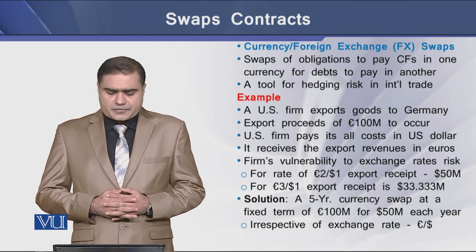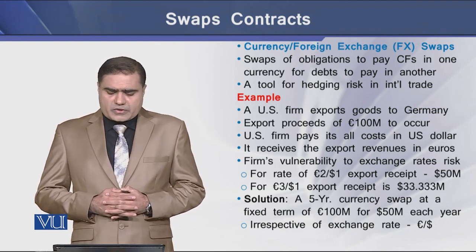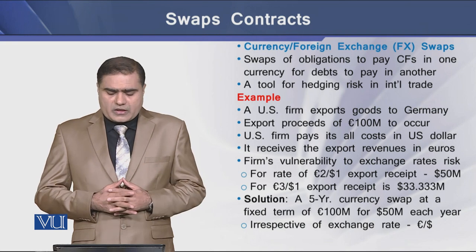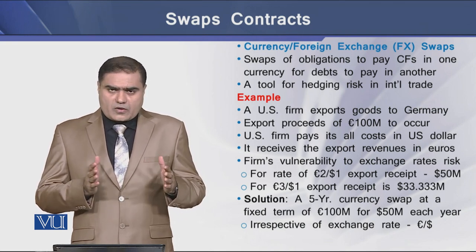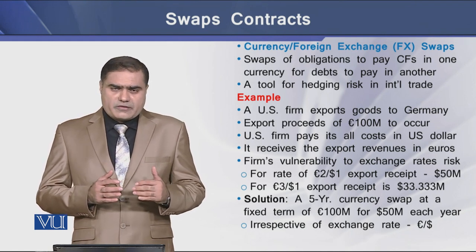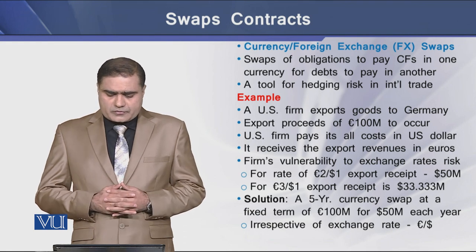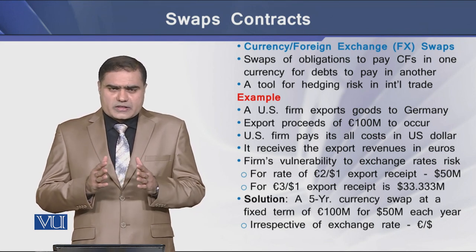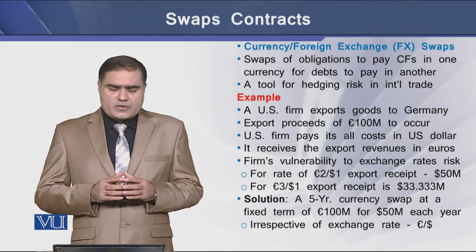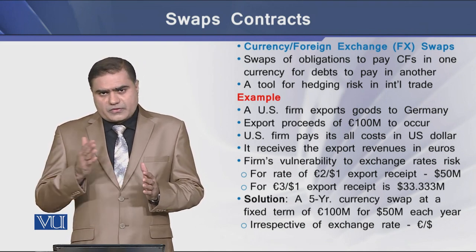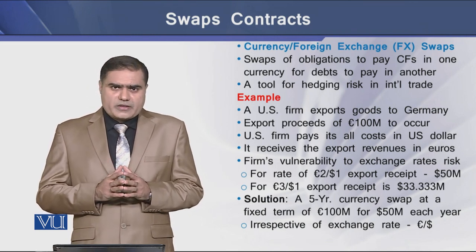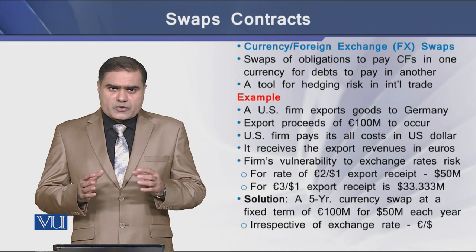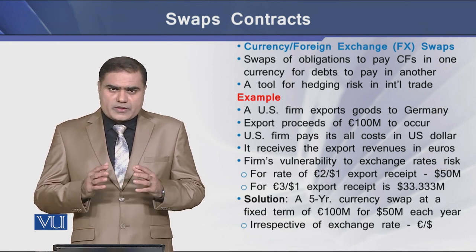For example, a US firm exports goods to Germany with expected export proceeds of 100 million Euro. The US firm is paying all its costs in US dollars but receiving revenues in Euro, so there is a chance the firm is exposed to exchange rate risk. For an exchange rate of 2 Euro to 1 dollar, the firm's receipts of 100 million Euro will equal 50 million dollars. But if the rate goes to 3 Euro per dollar, the dollar proceeds will be only 33.33 million dollars.